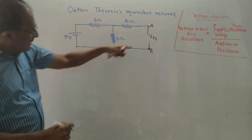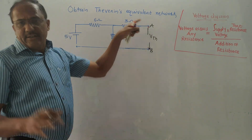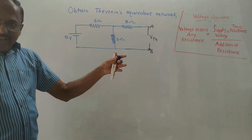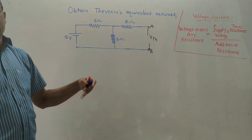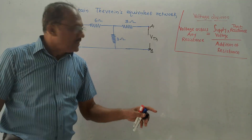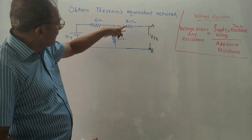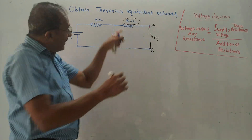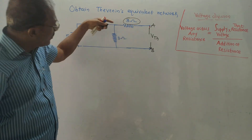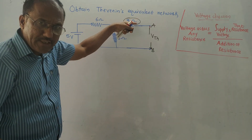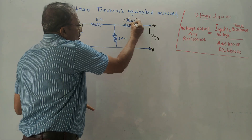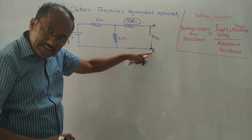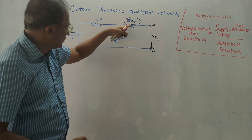Look at this diagram — this is open circuited. Keep in mind a very basic thing: whenever any wire is open circuited, it is not connected to the next stage, so no current flows through it. That means, due to this open circuit, no current is flowing through this three ohm resistance. So even if it is connected in the circuit, it is of no use. I don't need to consider it for calculation of VTH, as A and B are open circuited and current is not flowing through this three ohm resistance.